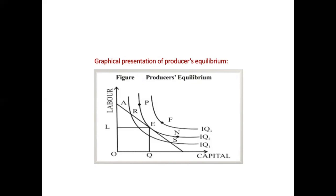By using the combination at point E, maximum profit can be attained. If point F is considered for equilibrium, it will not give maximum profit because it lies far above the available cost. If point R is chosen, it does not give maximum profit either, as it is beyond the iso cost line. So only the point falling on the iso cost line, along with the best combination of labor and capital, gives the maximum profit. This is what producer equilibrium is — isoquant, iso cost, and MRTS combined together.